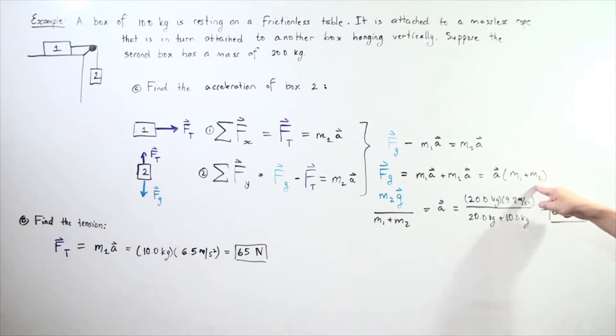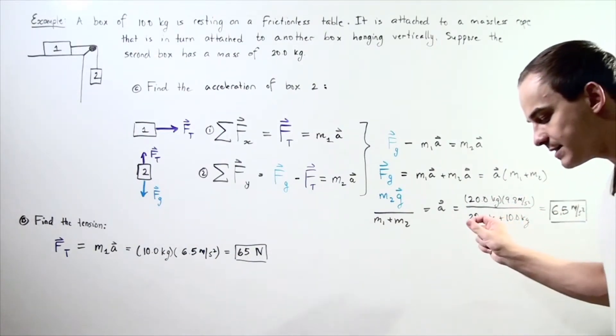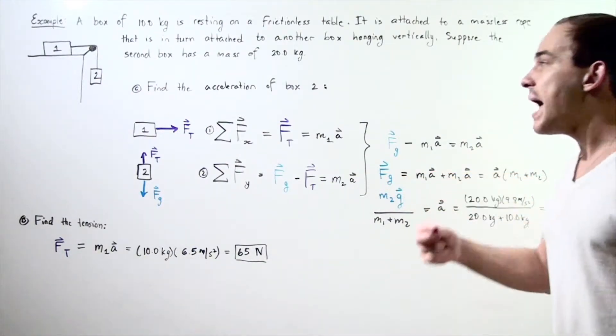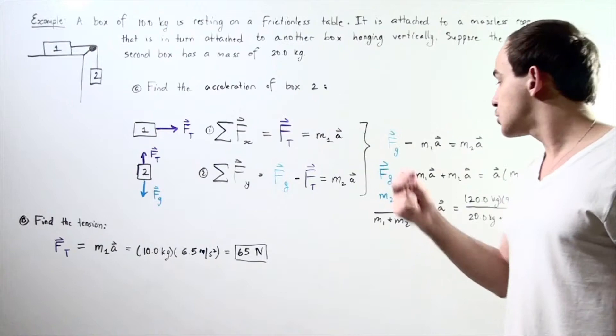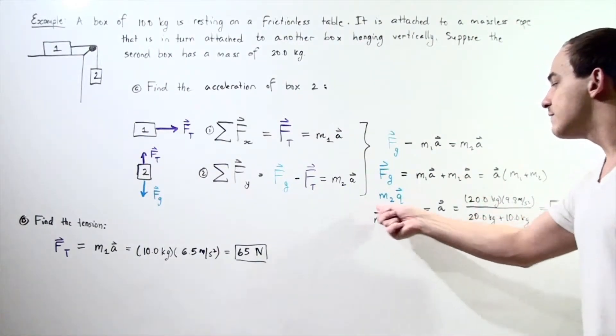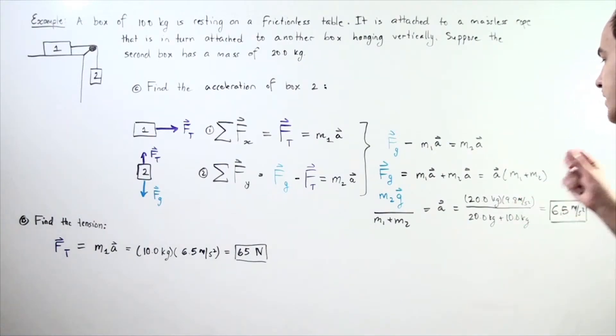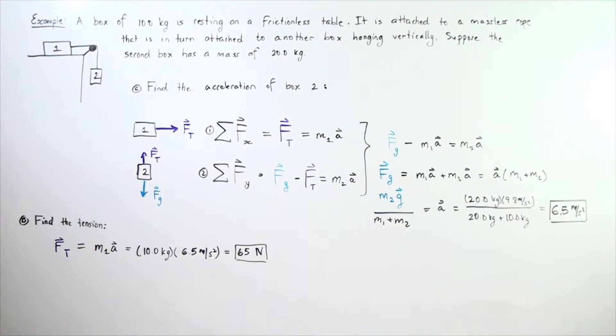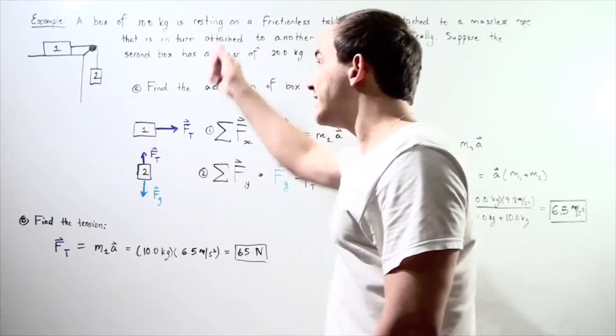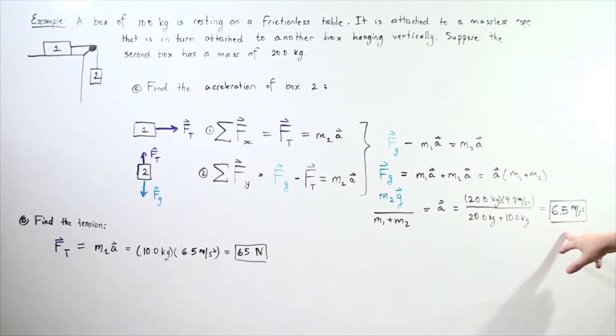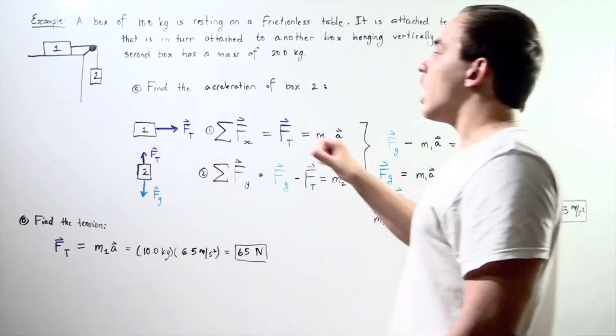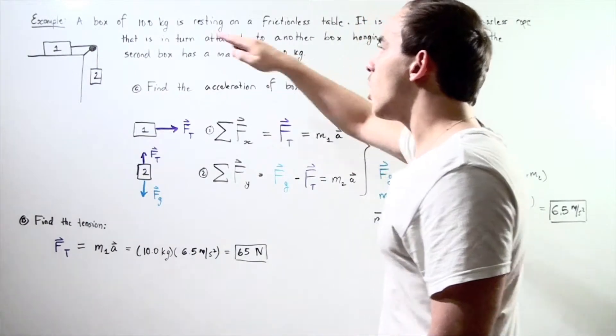Dividing both sides by (m₁ + m₂), we get a = F_g/(m₁ + m₂) = m₂g/(m₁ + m₂). Plugging in our known values, the acceleration is approximately 6.5 meters per second squared. Box two will accelerate downward with this acceleration, and box one will accelerate with the same acceleration along the x-axis.